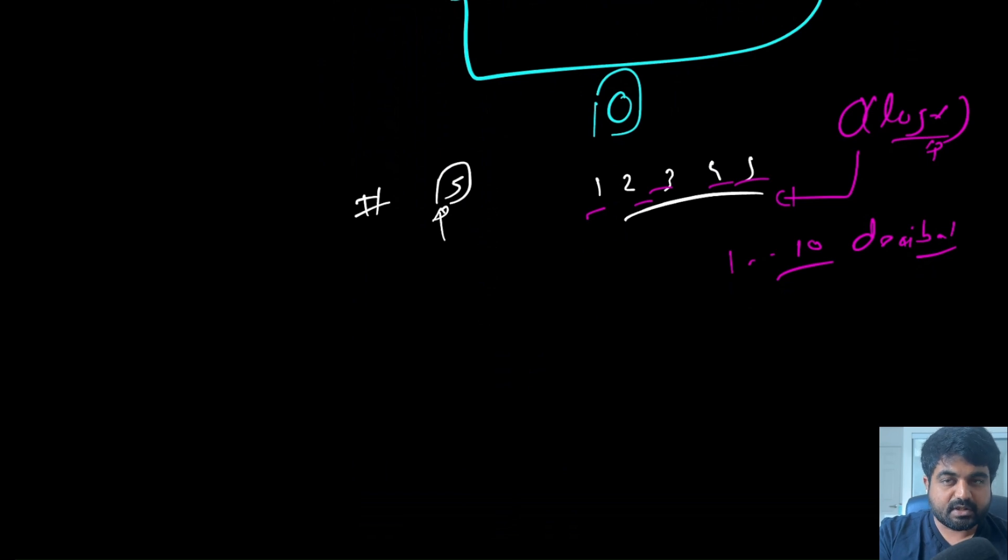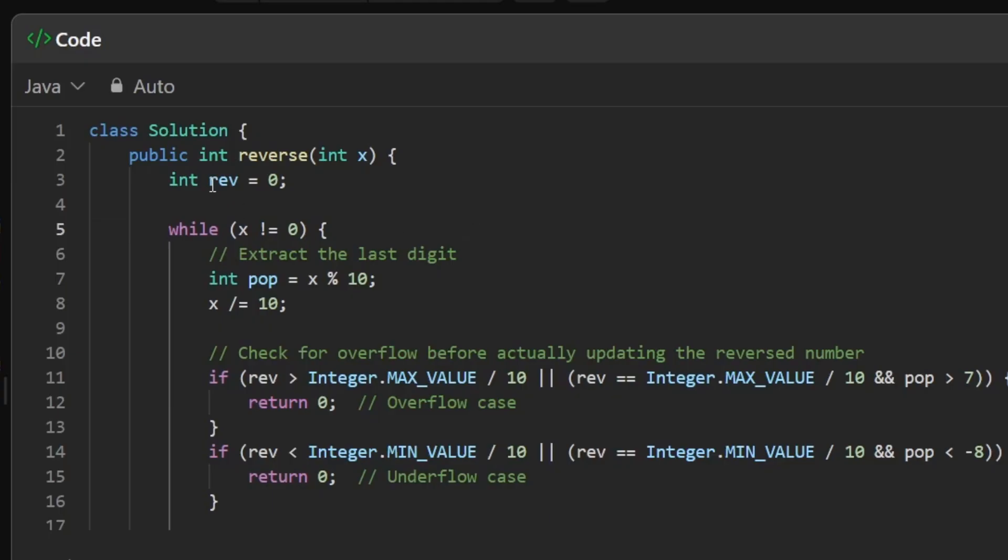Overall, this is a very simple straightforward solution and now let's quickly see the coding solution. First of all, we are going to initialize a new variable called reverse where we are going to store the answer.